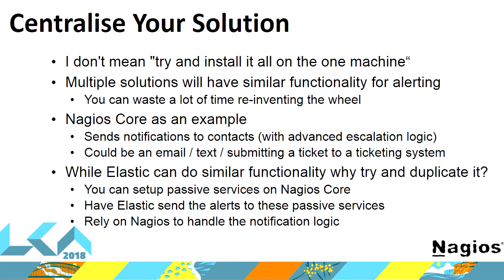I don't mean centralise your solution and try to install everything on one monitoring box. Don't try and reinvent the wheel if you don't need to. For example, Nagios can do your notifications and has escalation logic built in — it can send notifications to email, a cell phone, or a ticketing system. You could also configure Elastic to do that same type of thing, but then you may not want to duplicate that functionality. You could easily configure Nagios to have some passive services and get Elastic to send alerts to those passive services, so you can use the notification logic in Nagios without having to double up on alerting when things go wrong.